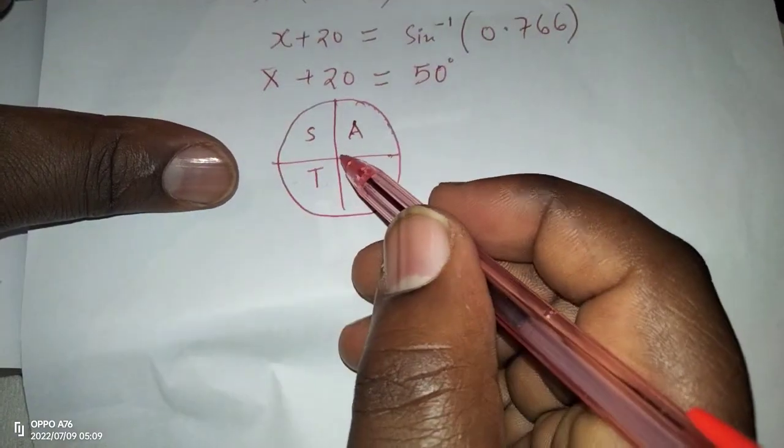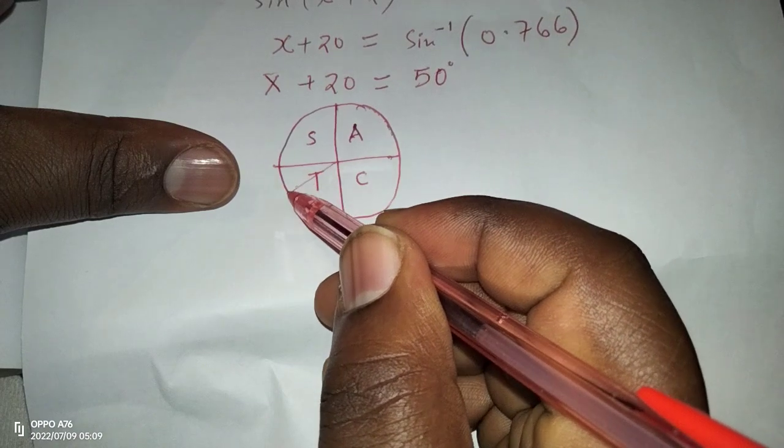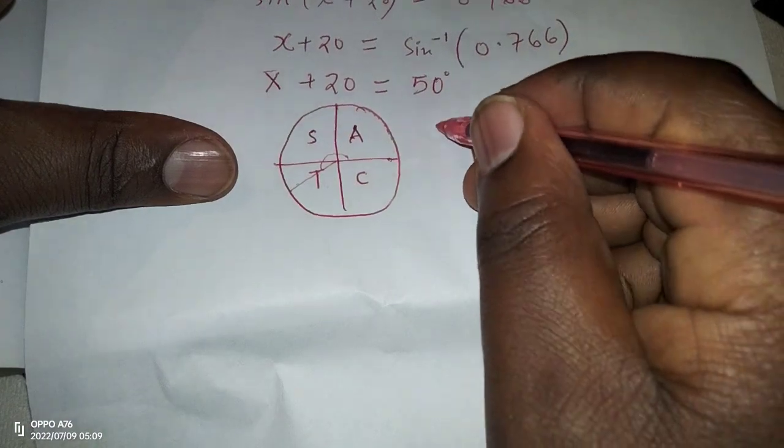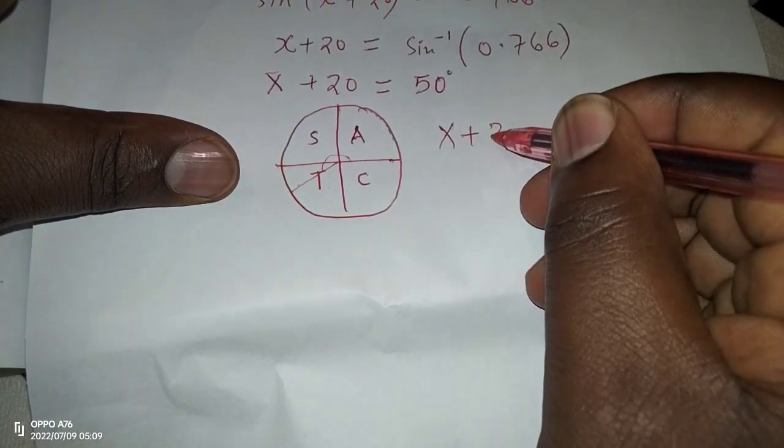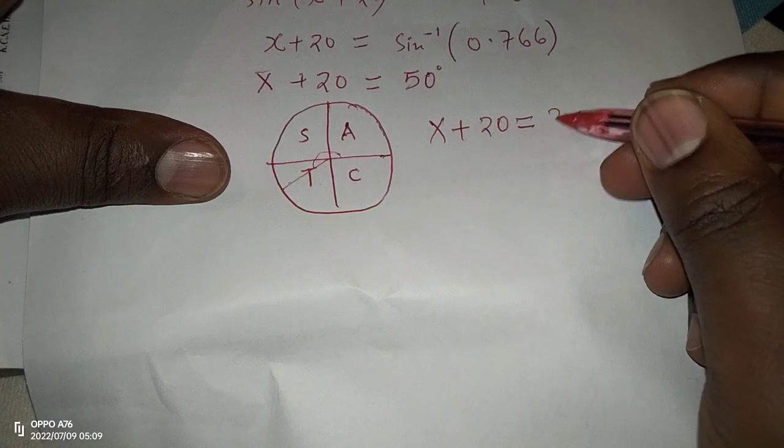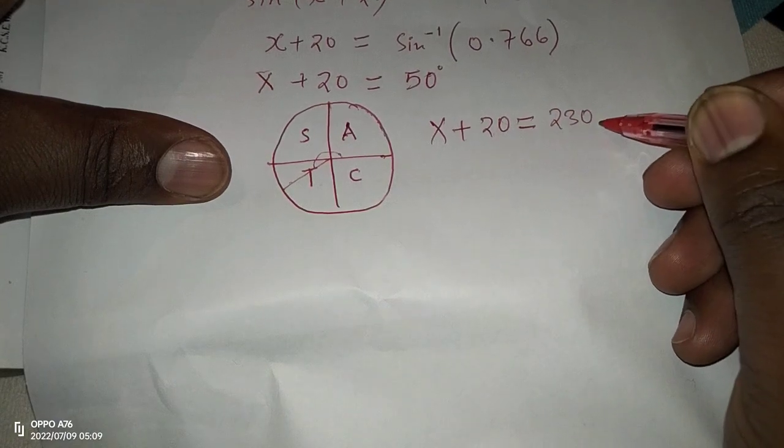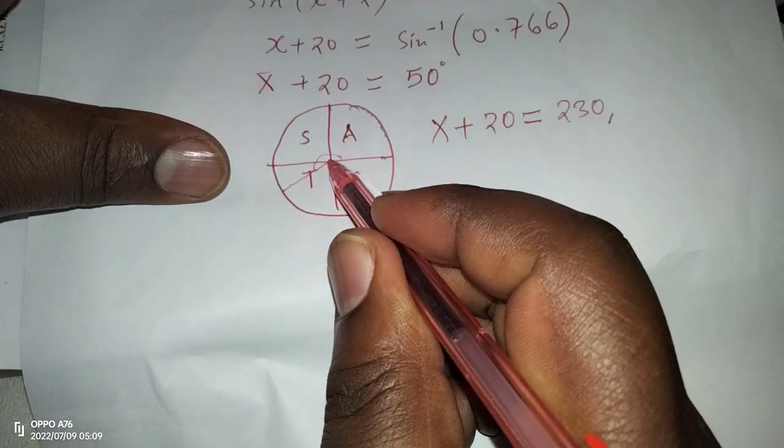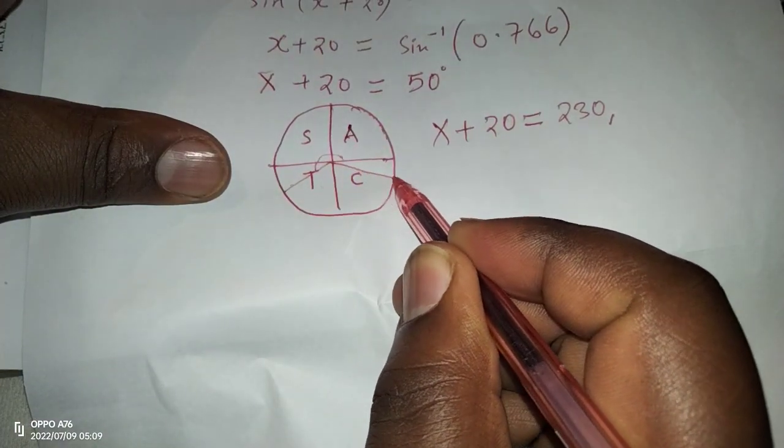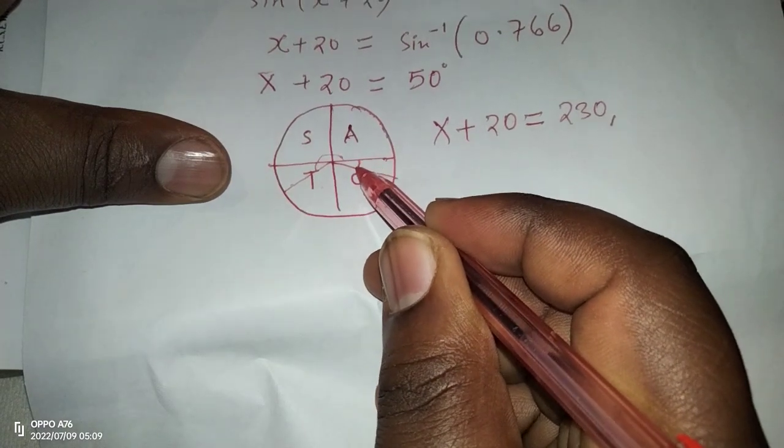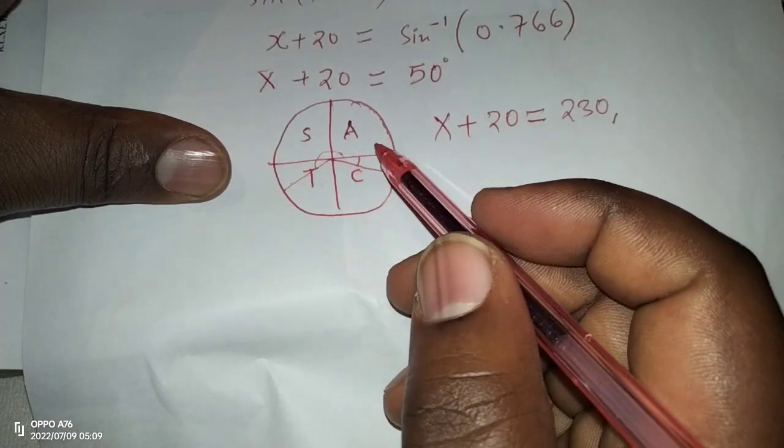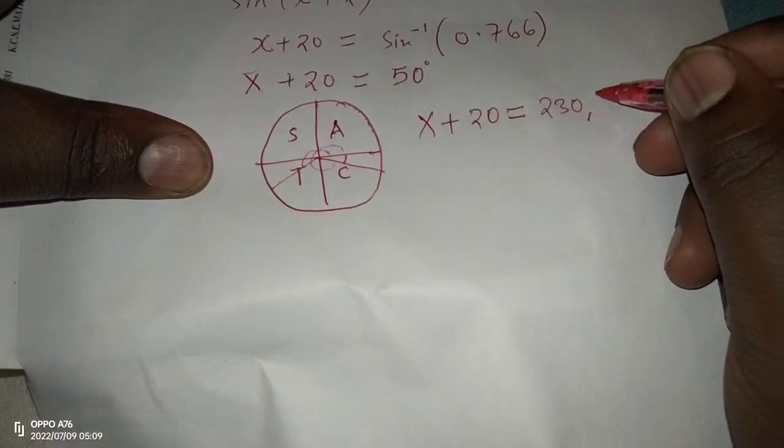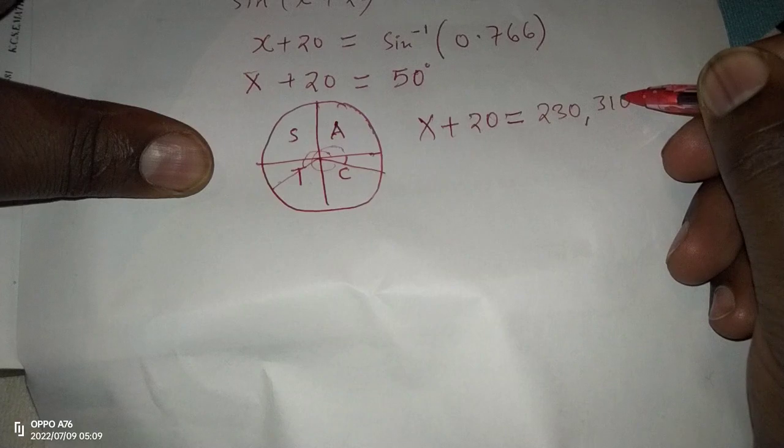So 50 degrees in the third quadrant becomes 180 plus 50, which is x plus 20 equals to the angle is 230 in the third quadrant, and the other angle is 50 degrees in the fourth quadrant, and 50 degrees in the fourth quadrant is going to be 310 degrees.